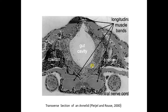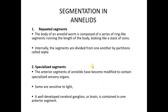This is a transverse section of a segment where you can see the gut, the coelom, and so on — it resembles that of a vertebra. Segmentation in annelids is very important because they got the name from segmentation; they are called segmented worms, so if there were no segmentation, there would be no annelid. There are two main types of segmentation: repeated segments, which are found towards the middle; and specialized segments found at the anterior and posterior extremes, which have some specialized structures.